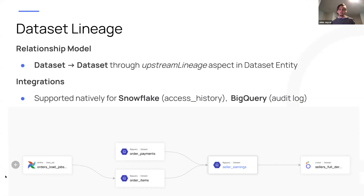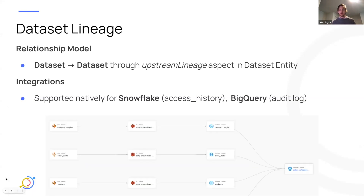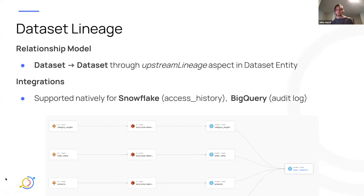We also support Snowflake-to-Snowflake dataset lineage. One other thing to call out is we support fetching lineage between Redshift and external tables. On the left side of the screen, you can see a Redshift table pointing to an external source on Glue. That's a new addition to the lineage graph support.